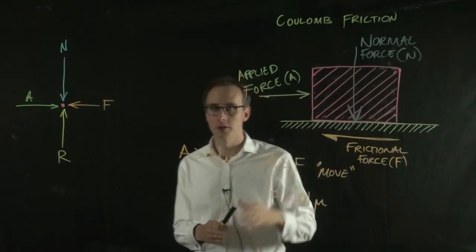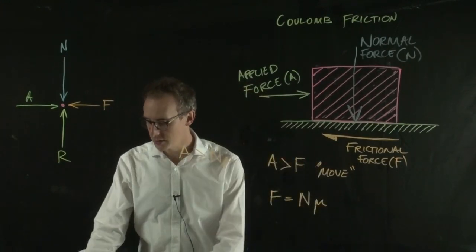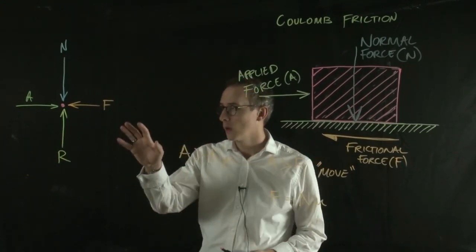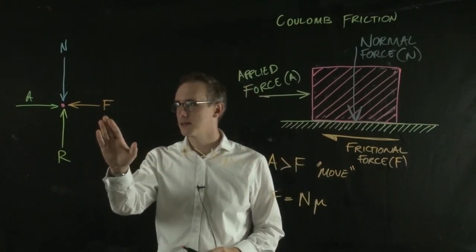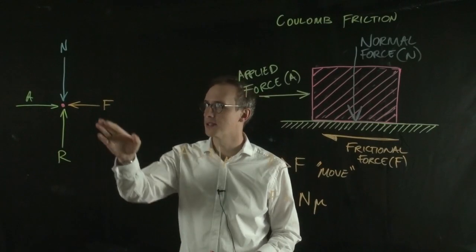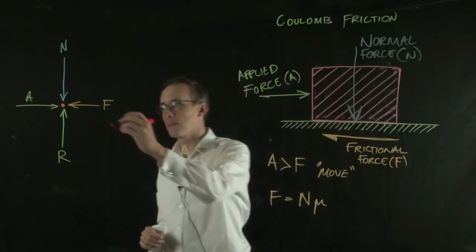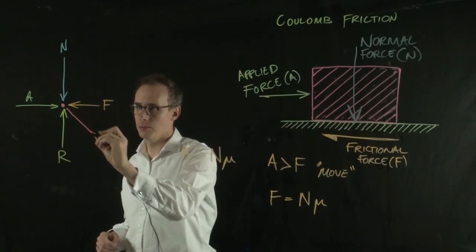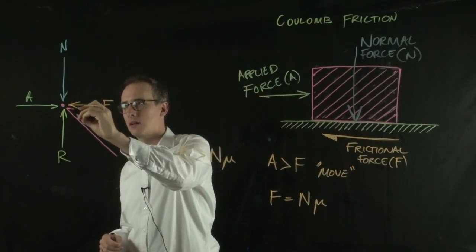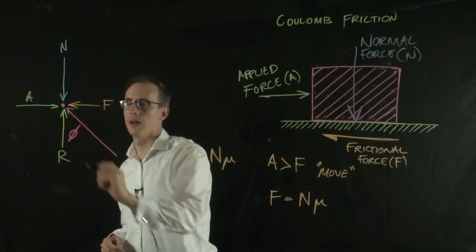We've taken that cartoon and represented it as a simple force diagram. Now we can combine these two resistive forces—the normal resistive force from the surface and the frictional force—into a single force acting at some angle from the vertical. Call that φ.